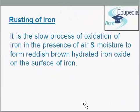Rust is a soft, porous, powdery, reddish brown substance. Rusting weakens the strength of iron railings, bridges, body of two-wheelers and automobiles.